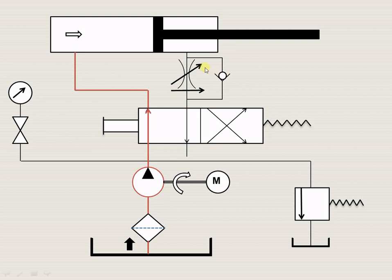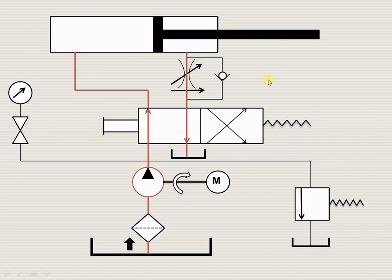The liquid from the rod end cannot pass through the check valve because this is the normally closed position of the check valve. So it will go through the restricted opening, meaning the liquid coming out goes to the reservoir in a lesser quantity — through this restricted opening. Therefore the motion of the piston rod can be controlled; we can control the speed in the forward direction. Since the liquid going out from the cylinder is controlled, this circuit is known as the meter out circuit.